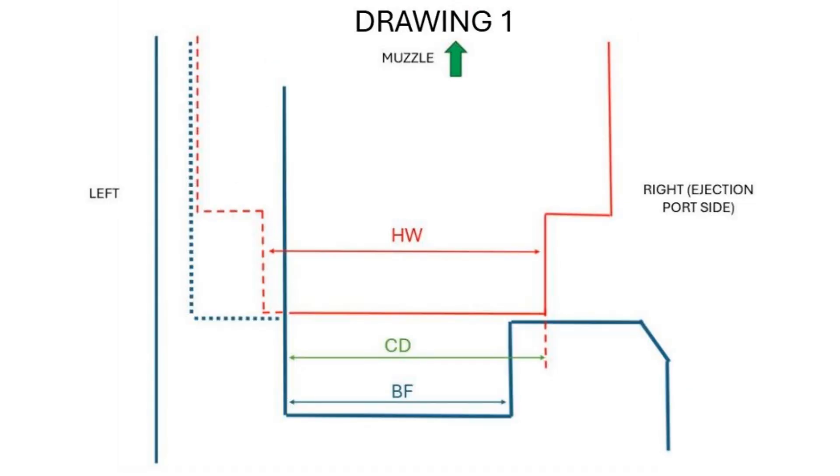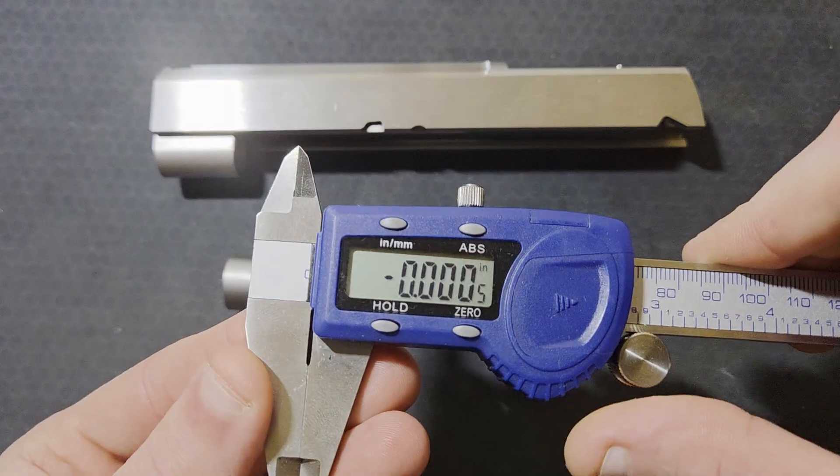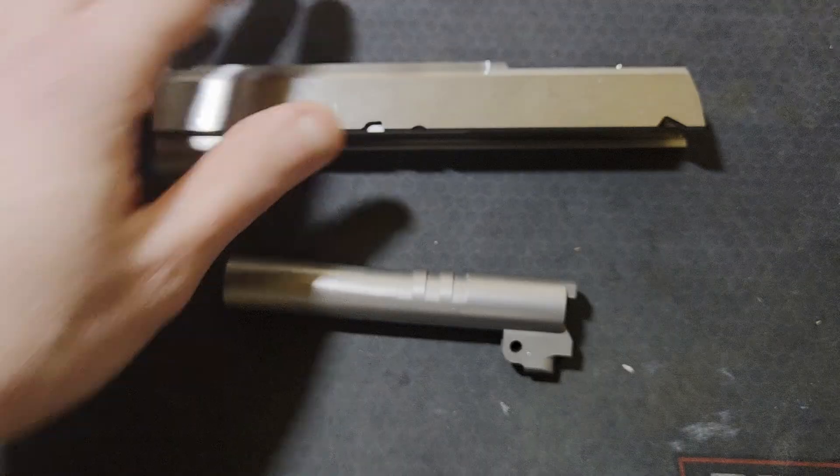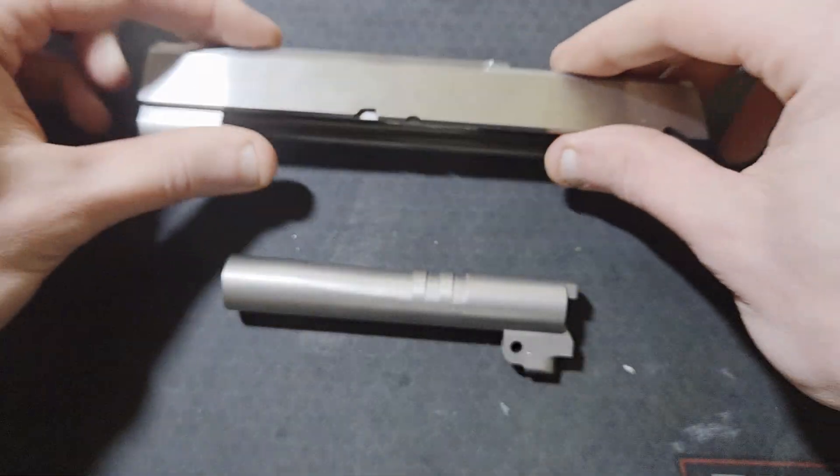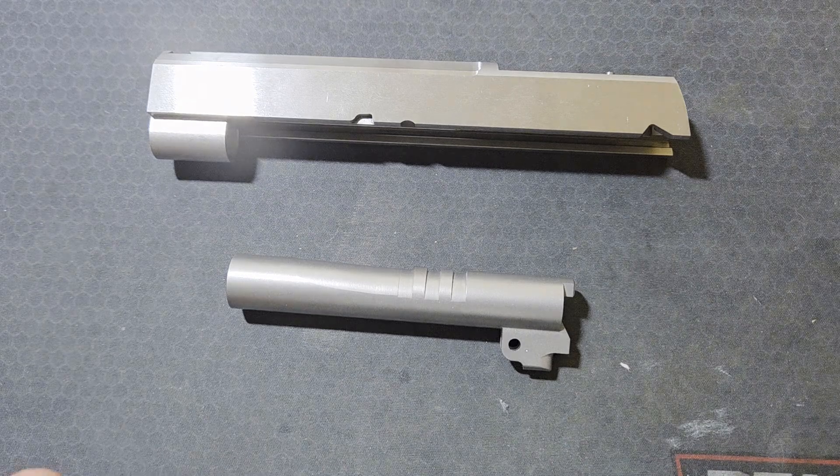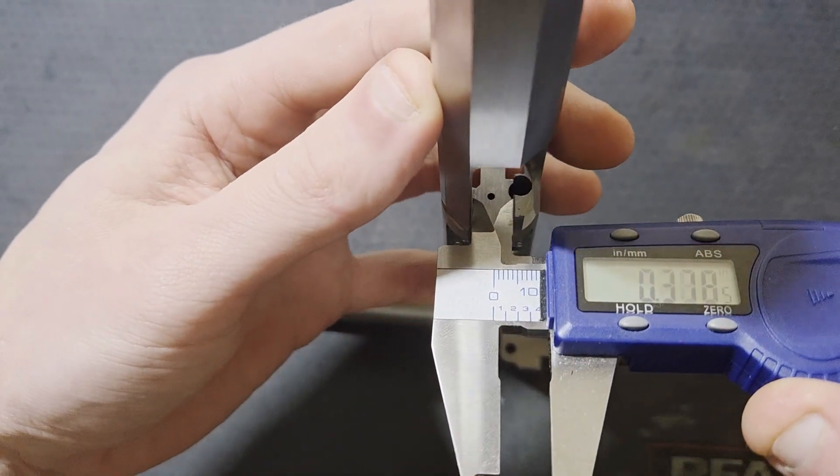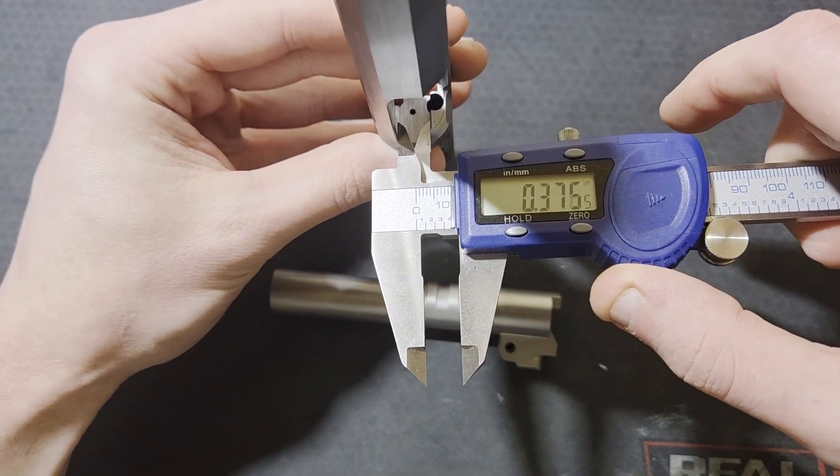First is the breach face width, commonly abbreviated BF. Before you take any measurements, make sure that your tool is zeroed and clean the jaws off and make sure the surfaces that you're going to be measuring are cleaned off and free of debris as well. The breach face is easy to measure. You can measure it just like this. You can see this one is right at 376.